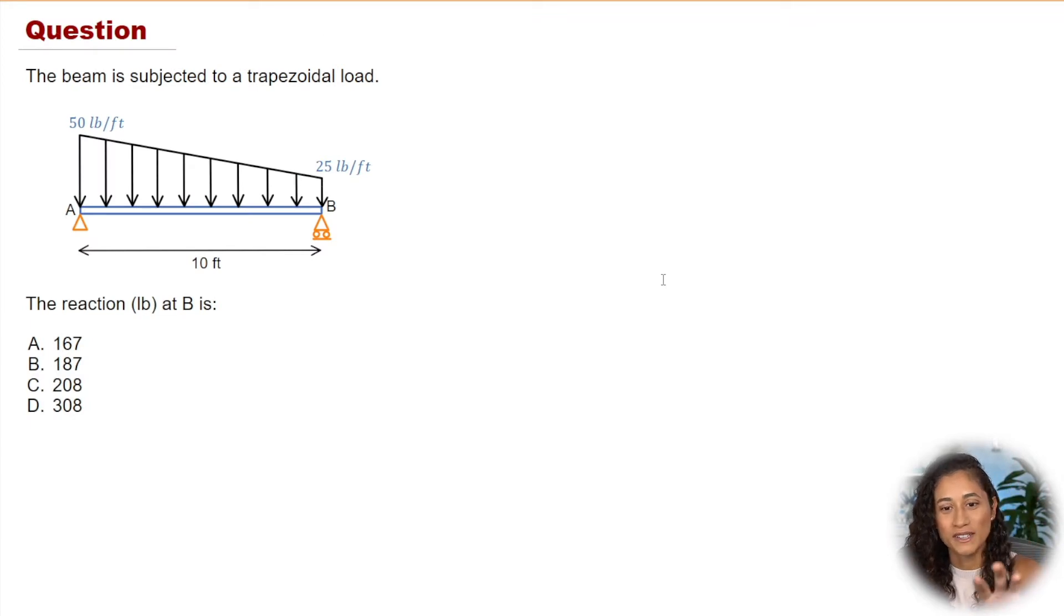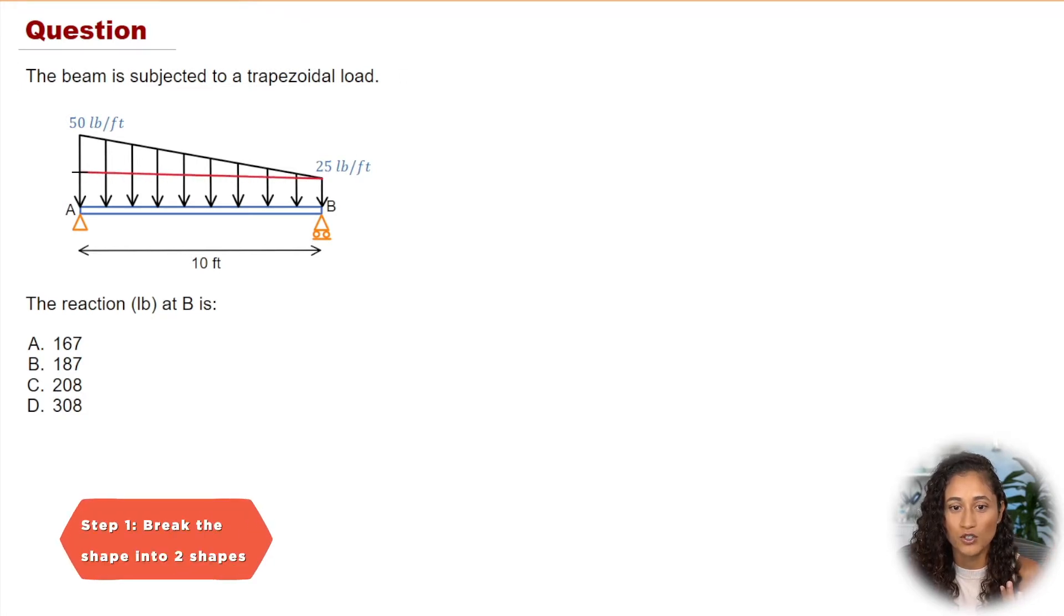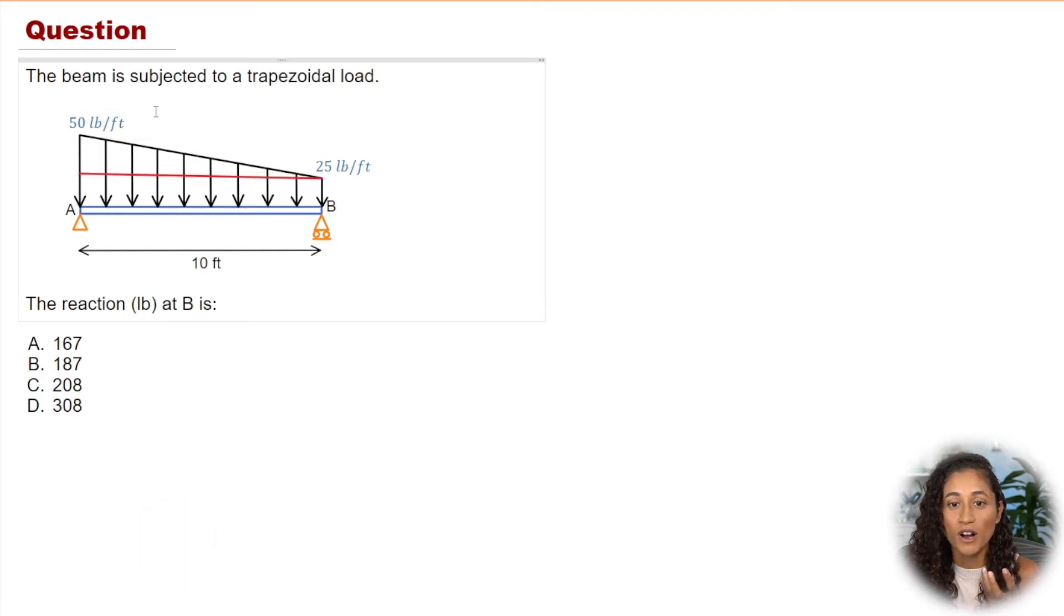In this problem, we are given this beam and we want to find the reaction at B. So the first thing we're gonna do is take this shape and break it into two shapes. We're gonna have a triangle and then a rectangle. The next thing we're gonna do is find the force of the triangle and then find the force of the rectangle so that way we can set up our moment equation.